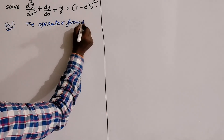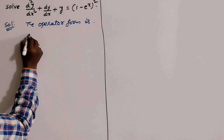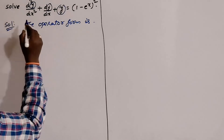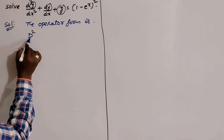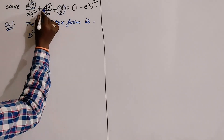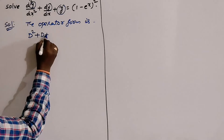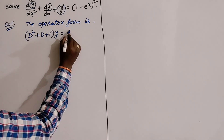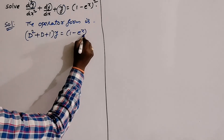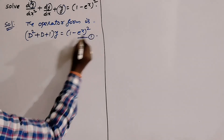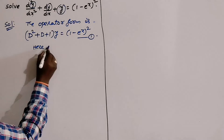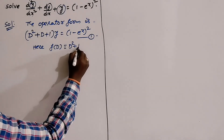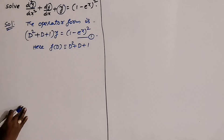The operator form is: D² is d²y/dx², D is dy/dx, and we have one y, so it becomes (D² + D + 1)y = (1 - eˣ)². This is equation (1). The function of D is D² + D + 1, which is a polynomial in terms of capital D, where D = d/dx.